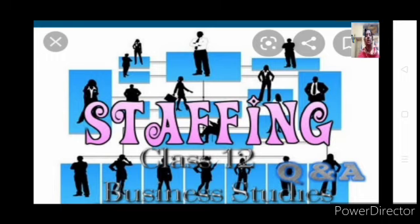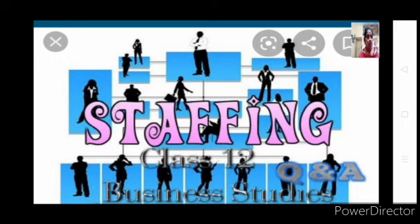You can observe the picture given behind this heading called staffing. You can see people in the organizational structure. We have already understood management, the guidelines for managers, the external environment of a business, and then we studied planning. We have seen organizing. Now the most important function of a manager is called staffing.